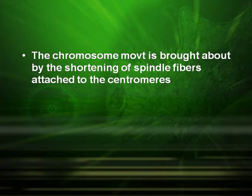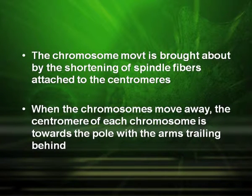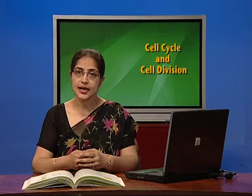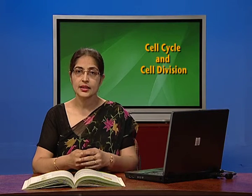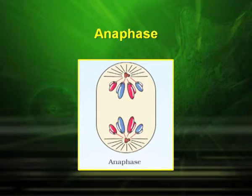When the chromosomes move away, the centromere of each chromosome is towards the pole with the arms trailing behind. Thus, diagrammatically, a typical anaphase is seen as shown in this picture.